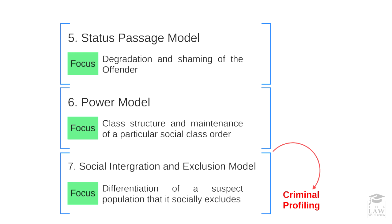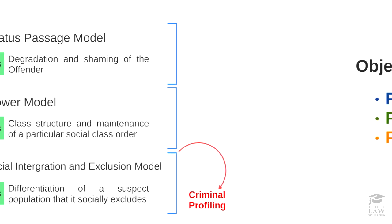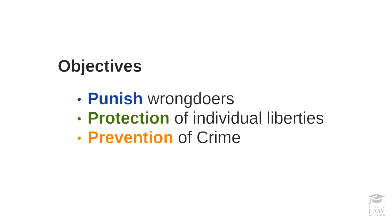Having considered all of these models or theories, it is important to note that no matter what model a particular country or jurisdiction abides by, or how amalgamated or mixed it might be, the objectives will definitely remain the same and can be summarized into three main points. Any criminal justice process is there to punish wrongdoers, to protect individual liberties, and most importantly, it is a mechanism by which the state tries to prevent crime.